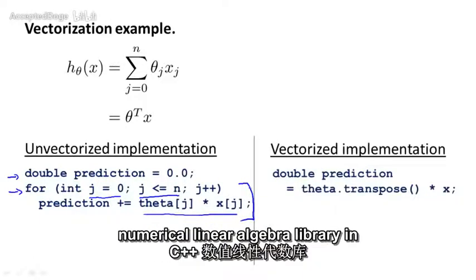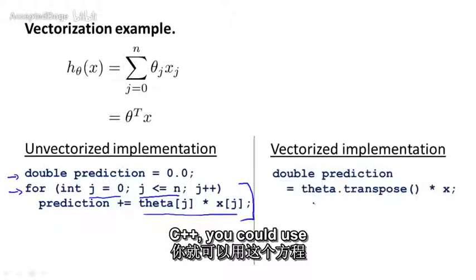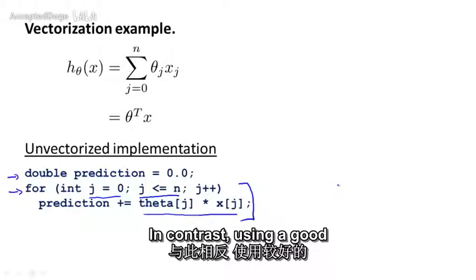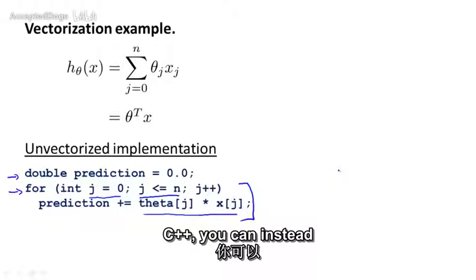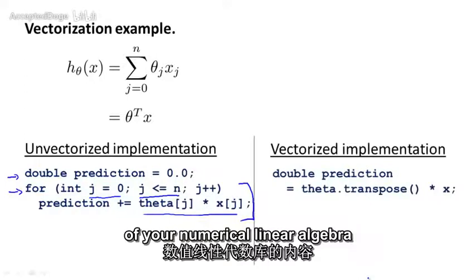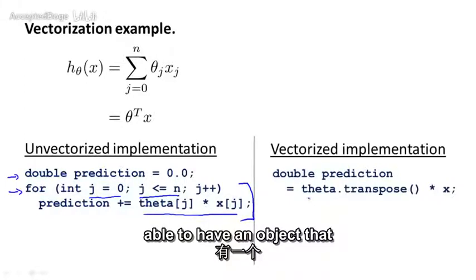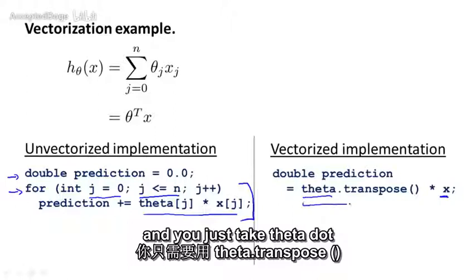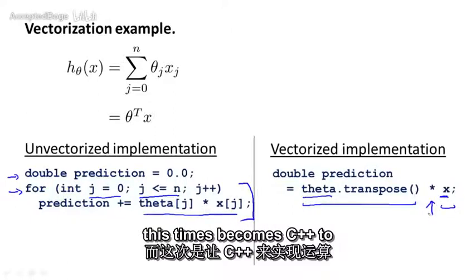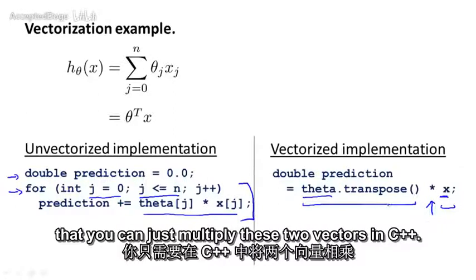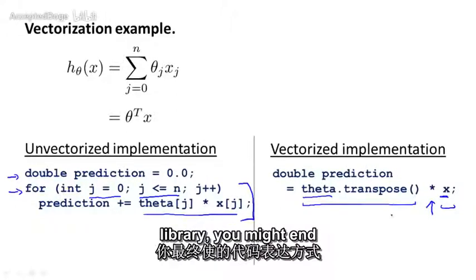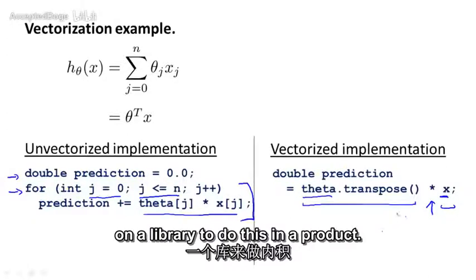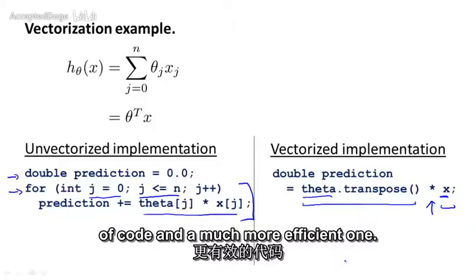In contrast, using a good numerical linear algebra library in C++, you can instead write code that might look like this. So depending on the details of your numerical linear algebra library, you might have an object. This is a C++ object, which is a vector theta, and a C++ object, which is a vector x. And you just take theta dot transpose times x, where this times becomes a C++ overloaded operator. So you can just multiply these two vectors in C++. And depending on the details of your numerical linear algebra library, you might end up using a slightly different syntax. But by relying on the library to do this inner product, you can get a much simpler piece of code and a much more efficient one.